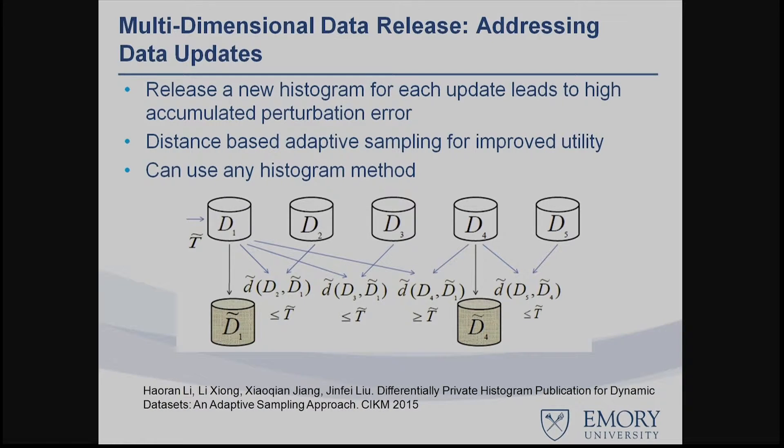Applying DP noise naively every time leads to very high accumulated perturbation error. We developed a dynamic approach based on distance-based adaptive sampling: at every time point we evaluate how much the data has changed. If it changes significantly, we release a new histogram or generate new records; if the change is minor,